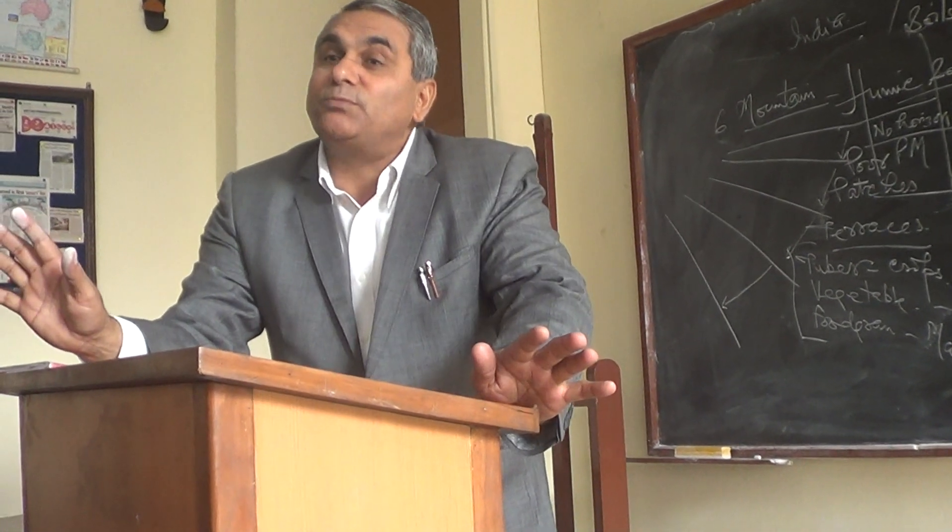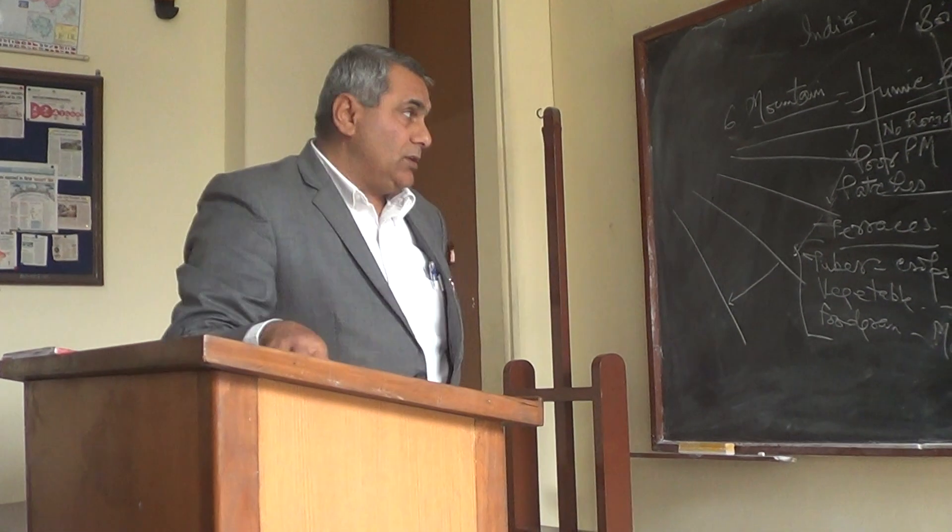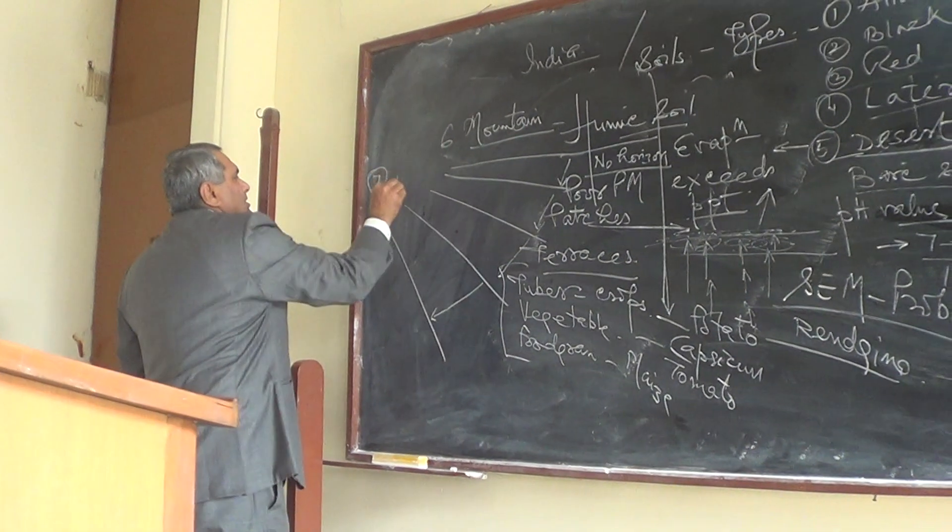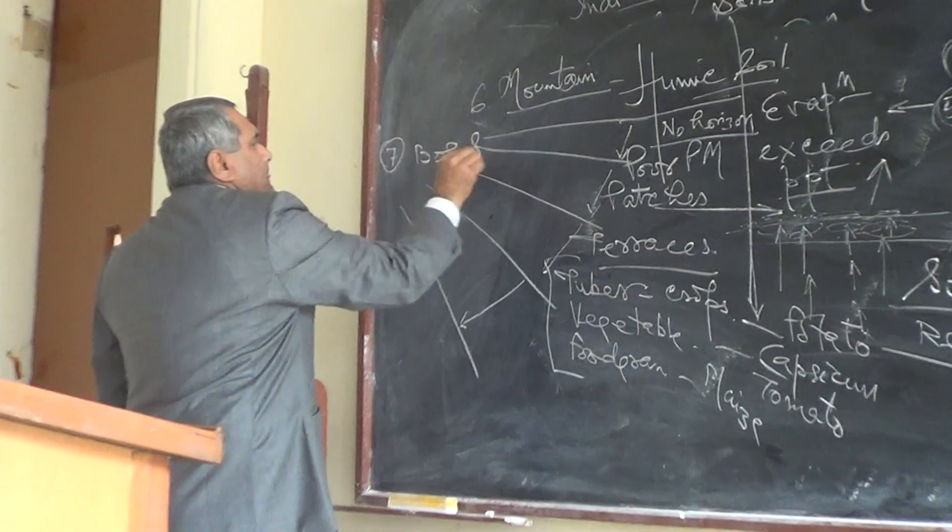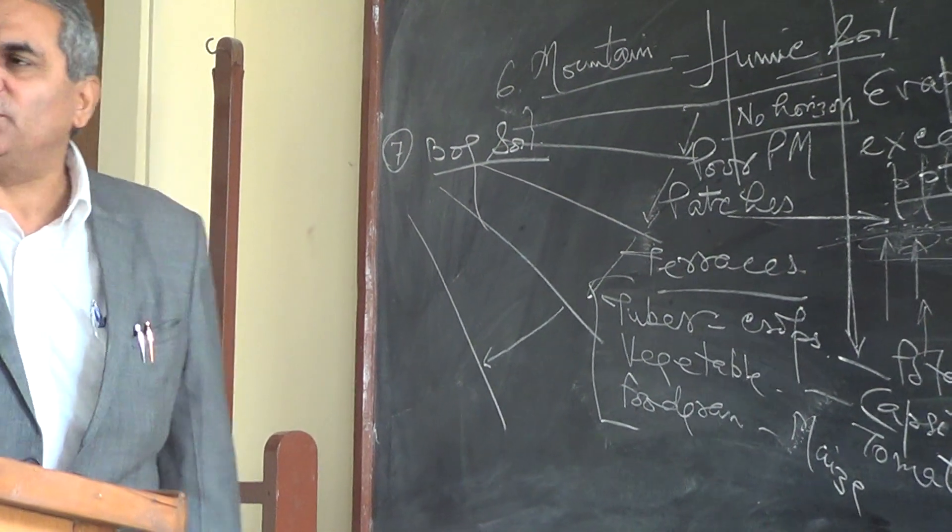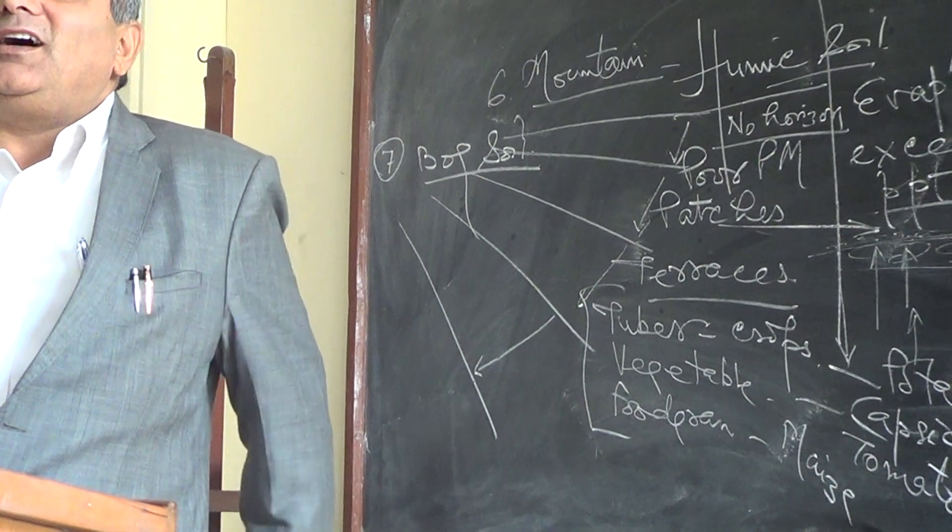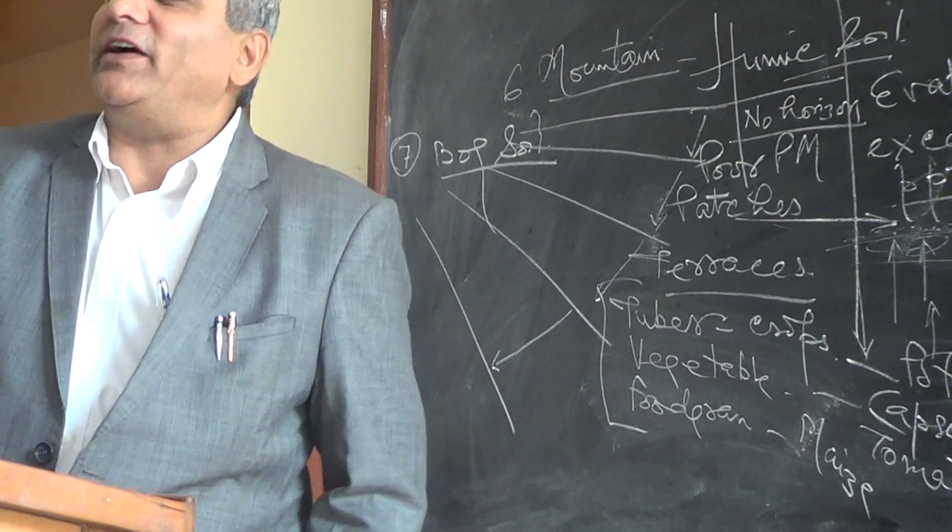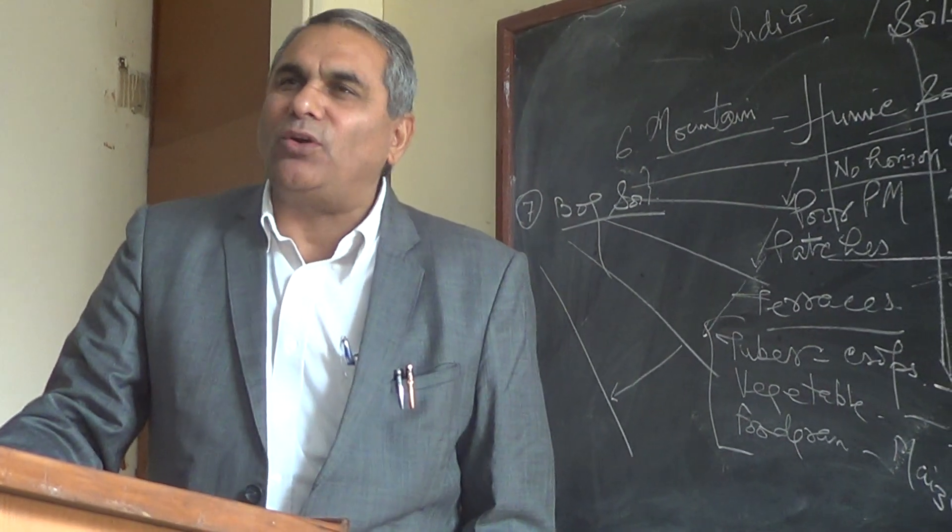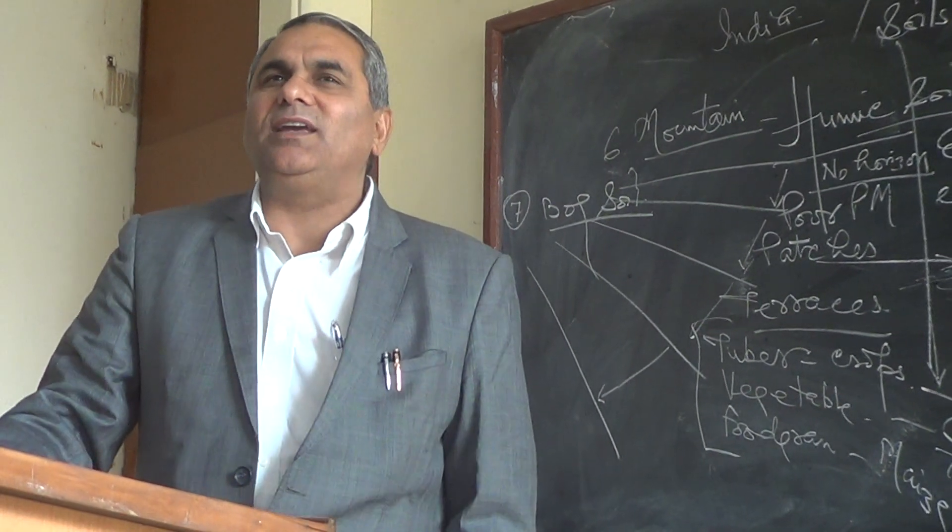You should know what is bog soil. Write down the seven types of soil - bog soil is one type. It is hydrophytic soil in standing water, in ponds, reservoirs, and lakes.